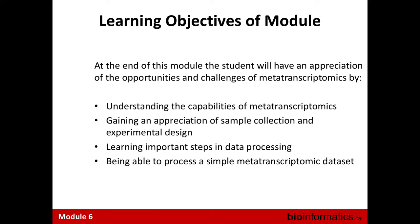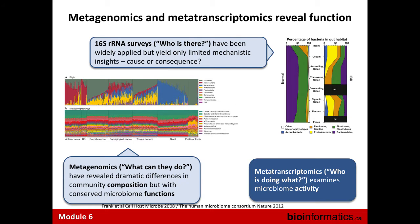Why metatranscriptomics? 16S ribosomal RNA surveys are great for telling us who is actually there, but they don't really give us much mechanistic understanding. For example, there's a study from a colleague in Colorado published around 2008 showing a breakdown of taxa from a normal gut versus an IBD gut. You can see differences in taxa at different points in the gut, but you don't know if that's a causal relationship or whether there's any functional consequence associated with it.